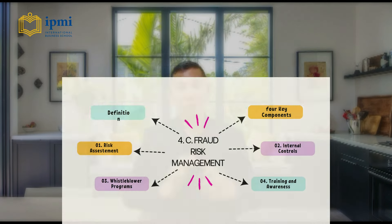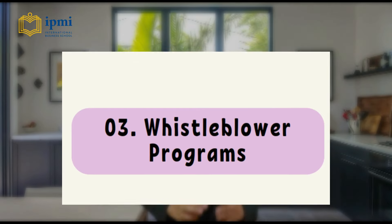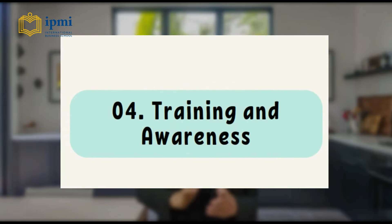Fraud risk management involves identifying, assessing, and mitigating risks associated with fraudulent activities. Fraud can take forms such as financial fraud, employee fraud, or cyber fraud. Key components include risk assessment to identify vulnerabilities, implementing internal controls such as segregation of duties, regular audits, and monitoring systems, establishing whistleblower programs for anonymous reporting, and providing training to employees to recognize signs of fraud and promote ethical behavior.